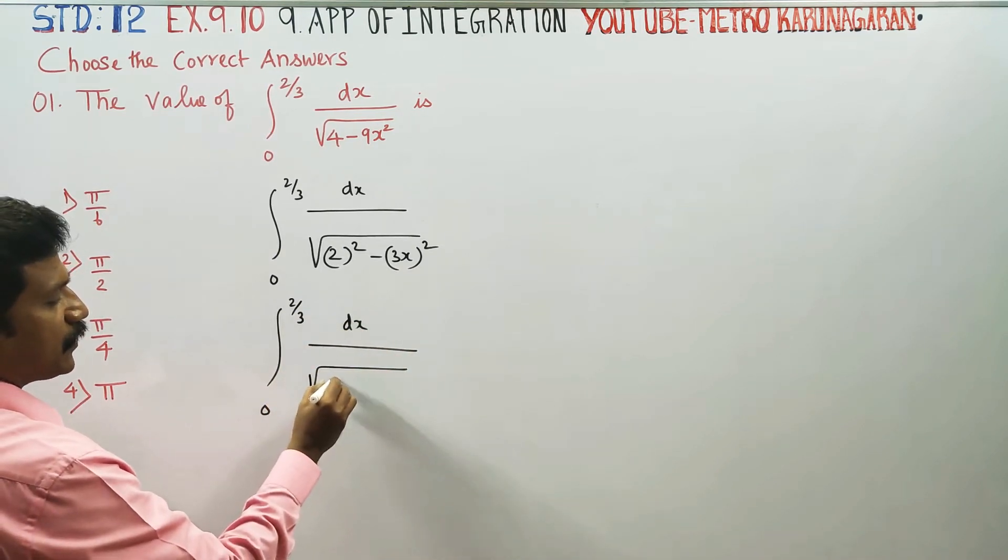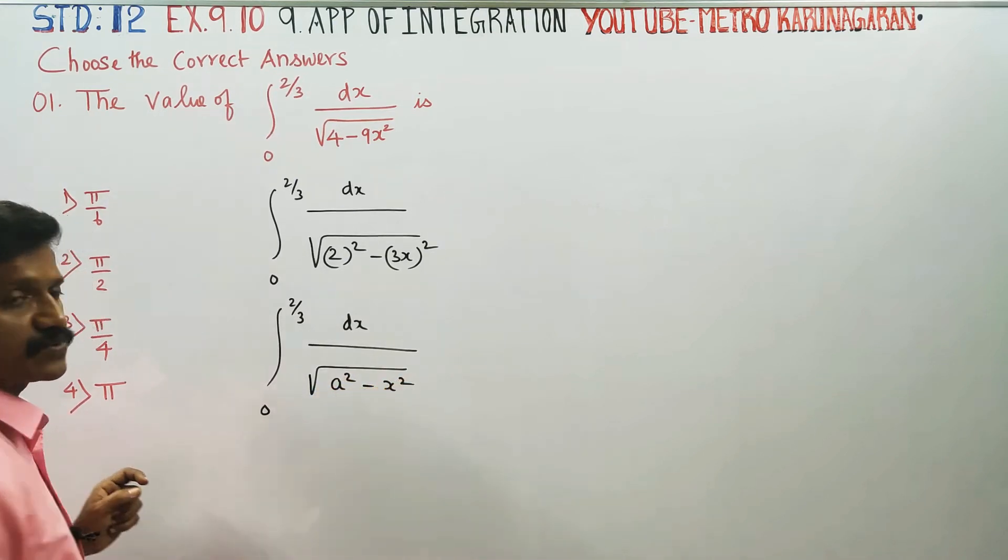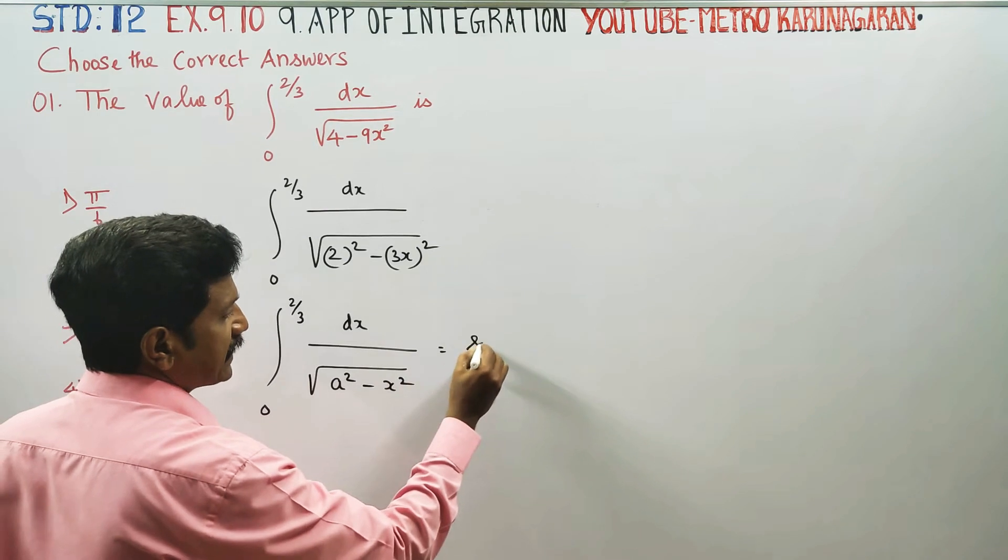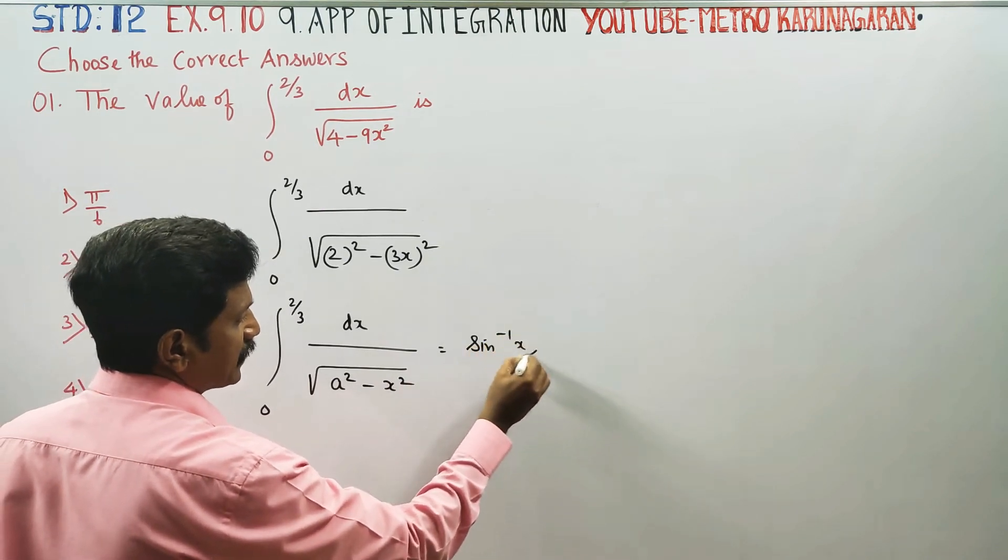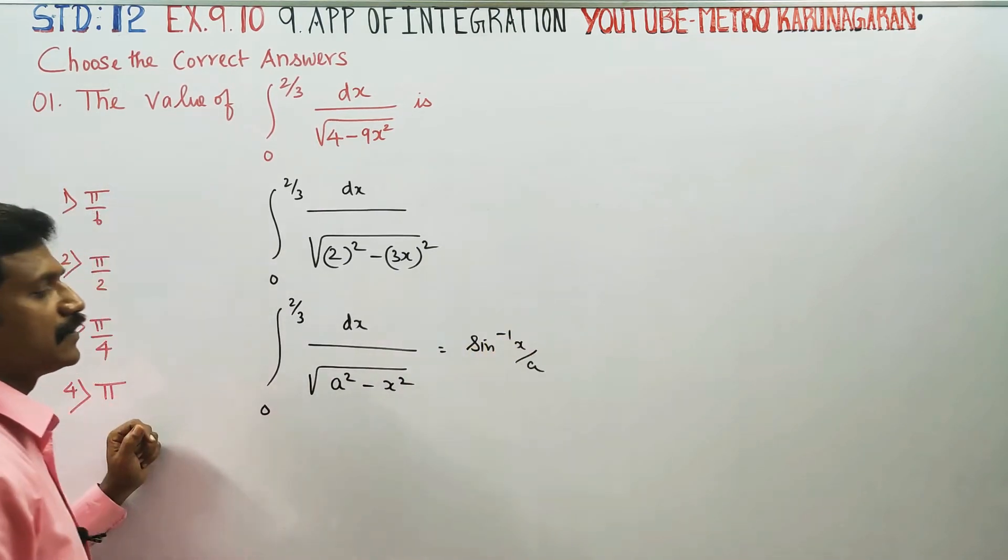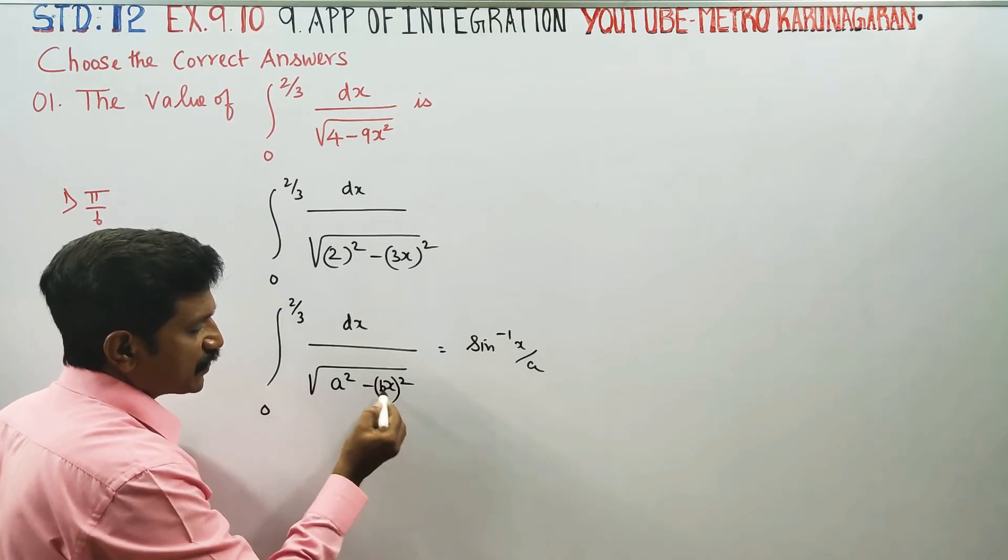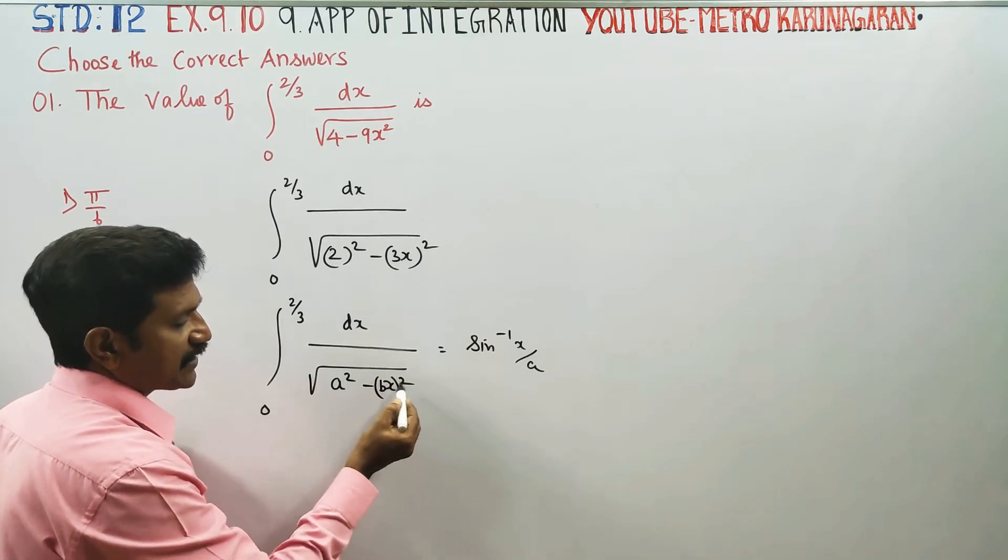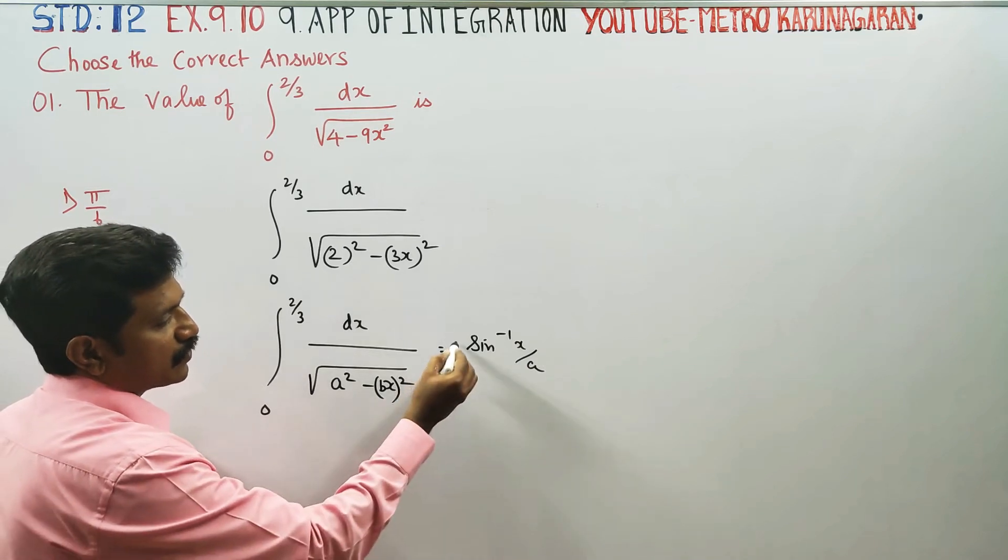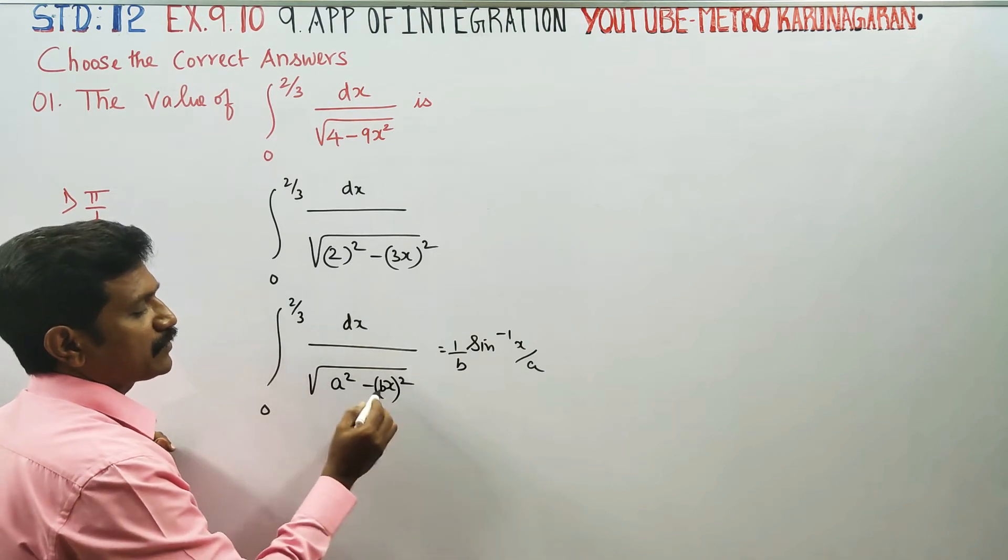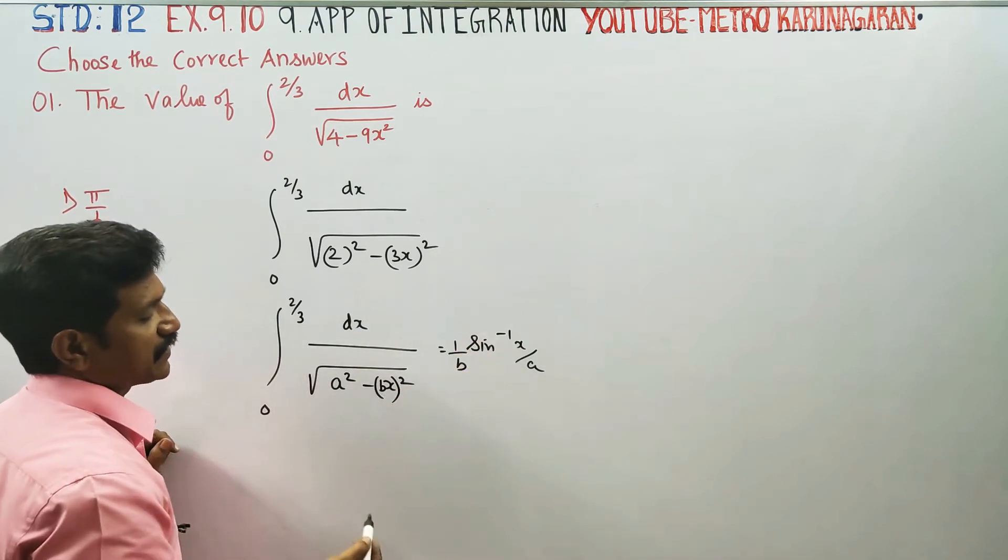In the formula you can say a² minus x². The general formula is sin inverse of x by a. This is the formula. X is the number, bx is the number, this is 1 by b. This a² minus x² gives sin inverse of x by a, this is the limits.